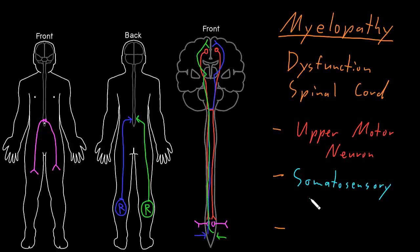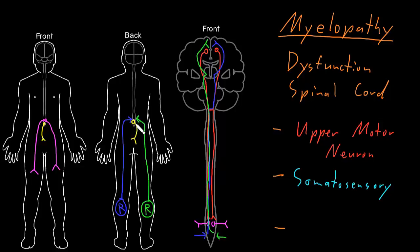Both types of tracts carrying different types of somatosensory information run on both sides, but eventually all somatosensory information from one side crosses over to the other side of the brain because of the way these tracts travel through the central nervous system. We also have autonomic neurons that send axons through the peripheral nervous system to structures like the urinary bladder, rectum, and anus, and these neurons are controlled by neurons that start in the brain and send axons down the spinal cord.